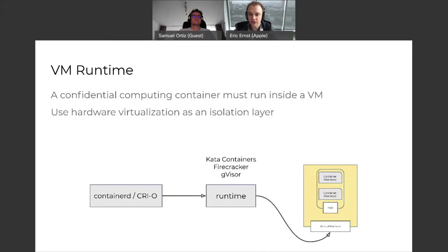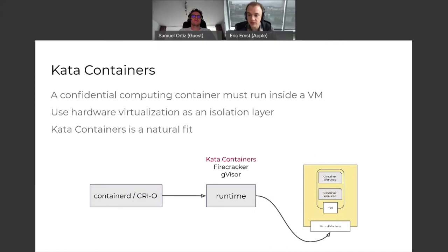Firecracker similarly has some device limitations that make it more challenging in a Kubernetes environment with multi-container pods. We see Kata containers as the more natural fit solution, providing full compatibility in Kubernetes, with support for VMMs like Cloud Hypervisor or QEMU, and providing the hooks necessary to leverage confidential computing.